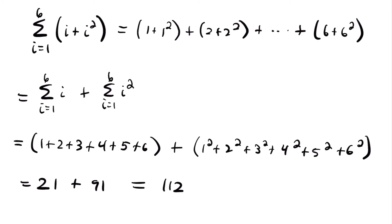Also note that this applies when you are subtracting terms as well. If we had i minus i squared instead, we could split that into this sum minus this sum. This works for both addition and subtraction. Now that we've covered the properties of sigma notation, let's look at some summation formulas that will save us from writing out all the terms.